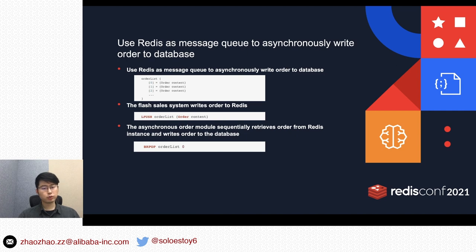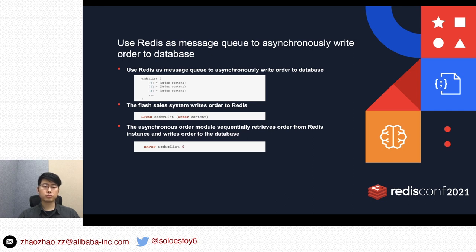Redis can also be used as a message queue to do async writes, using the Redis list data type. For example, the flash sales system pushes orders to Redis, and then an async write module retrieves the data from Redis and writes orders to the database asynchronously, avoiding writing orders directly to the database. This helps us avoid the database being blocked.